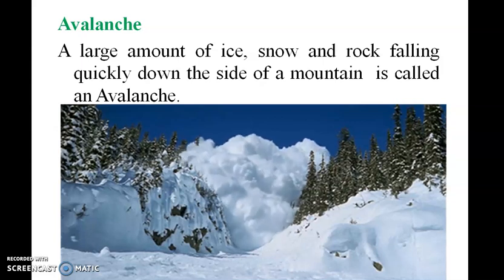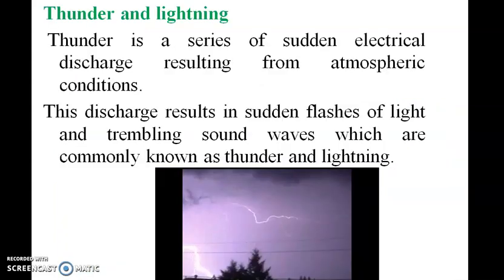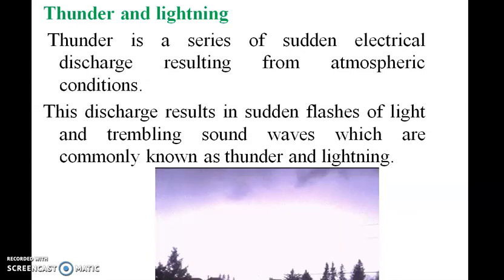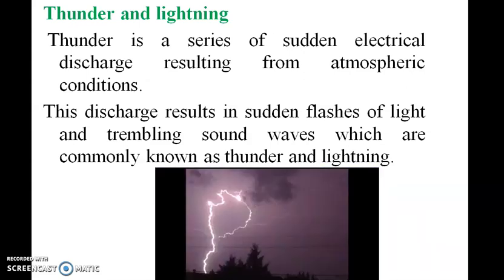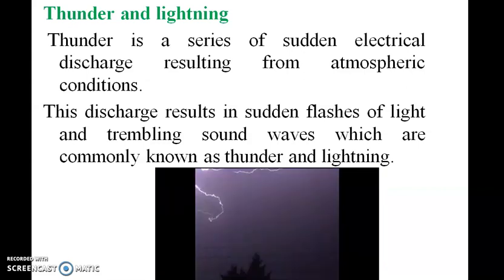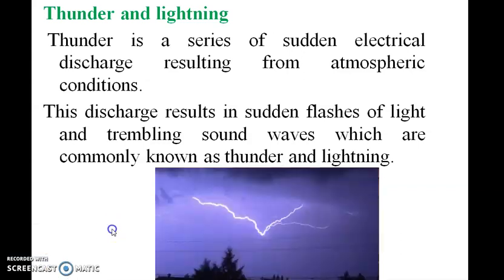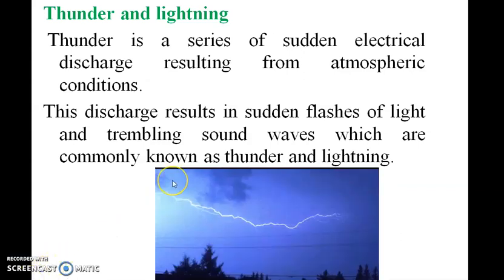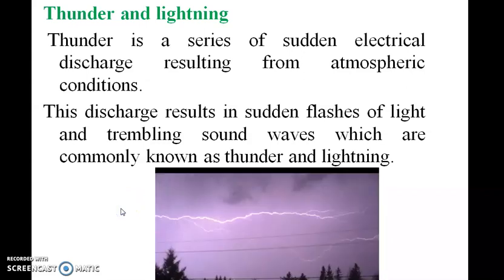Avalanche. The large mass of snow sliding down a mountain. Thunder and lightning: Thunder is a sudden electrical discharge resulting from atmospheric conditions. This discharge results in sudden flashes of light and trembling sound waves, which are commonly known as thunder and lightning.